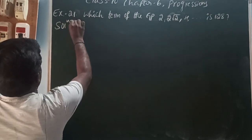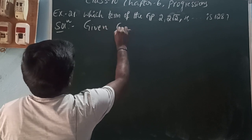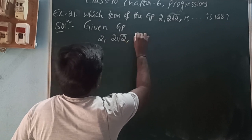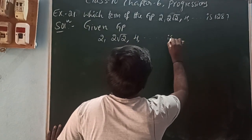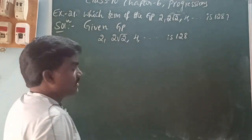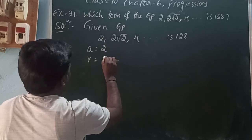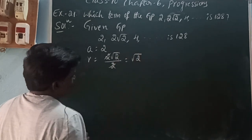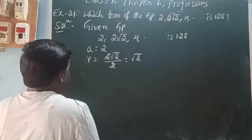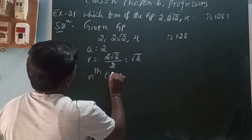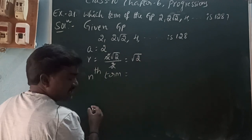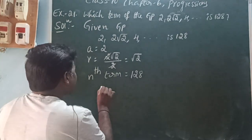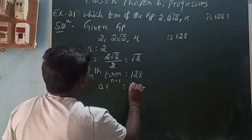Given the GP: 2, 2√2, 4, and so on. We need to find which term is 128. The first term a is equal to 2. The common ratio r is equal to 2√2 / 2 = √2. Since we don't know which term 128 is, let us say it is the nth term. So using the nth term formula: a·r^(n-1) = 128.